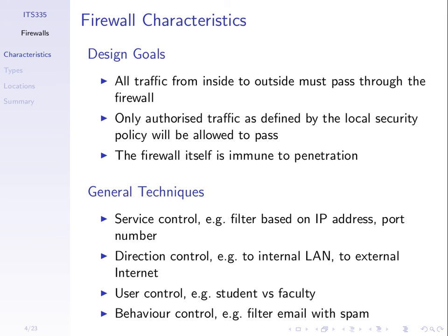User control — depending on which user is generating those packets. For example, I don't want to allow students to play games, but I want to allow faculty members to play games. We could have specific rules that try to identify users. The packets come to the firewall, and the firewall looks not just at addresses and direction, but also at who generated the packet, and makes different decisions.